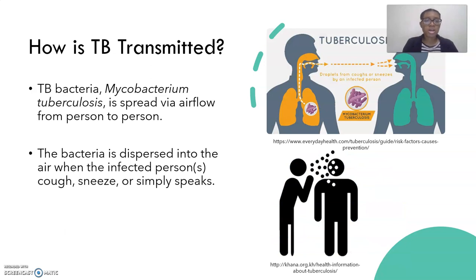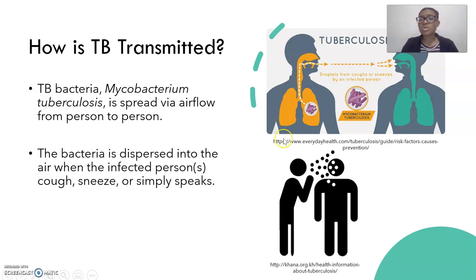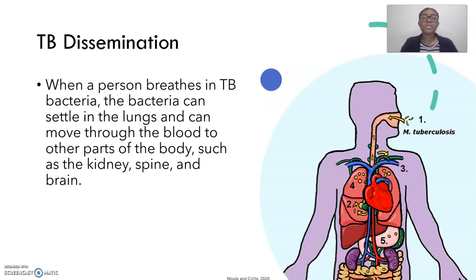TB bacteria is spread via airflow from person to person. The bacteria is dispersed into the air when an infected person coughs, sneezes, or simply speaks. This is shown in the figures to the right. When a person breathes in TB bacteria, the bacteria can settle in the lungs and can move throughout the blood to other parts of the body, such as the kidney, spine, and brain.